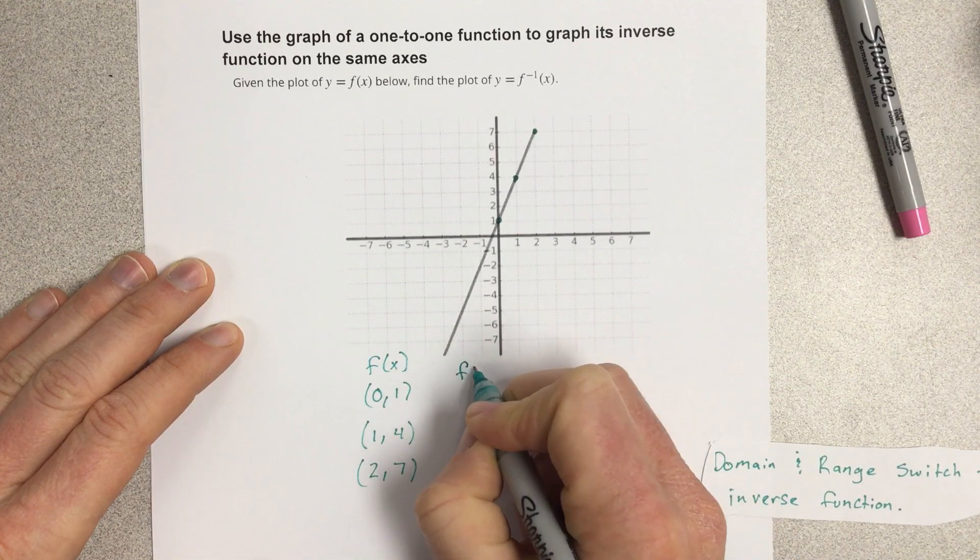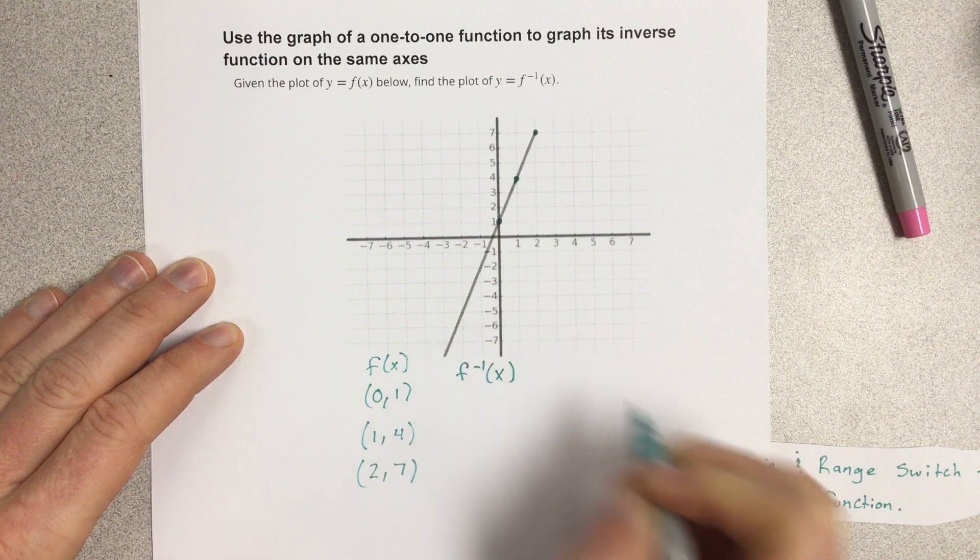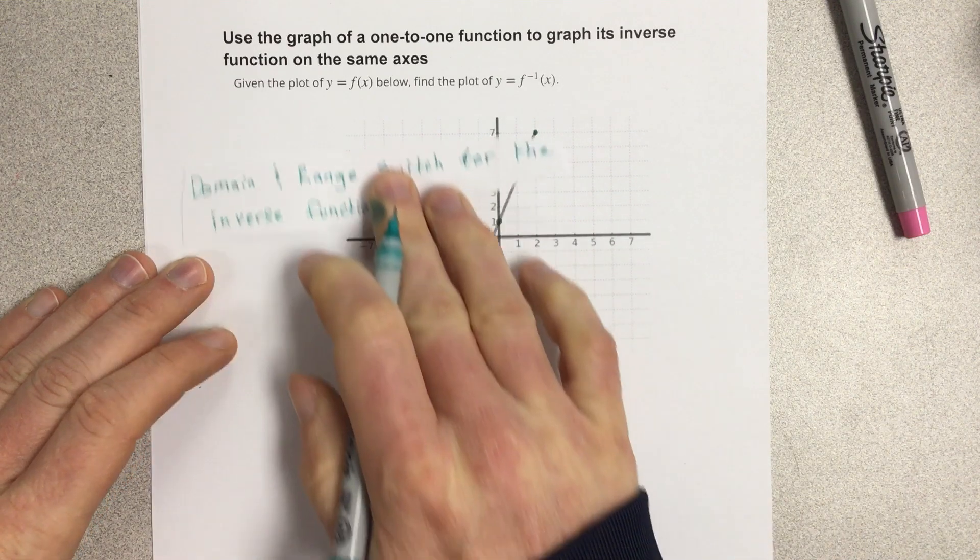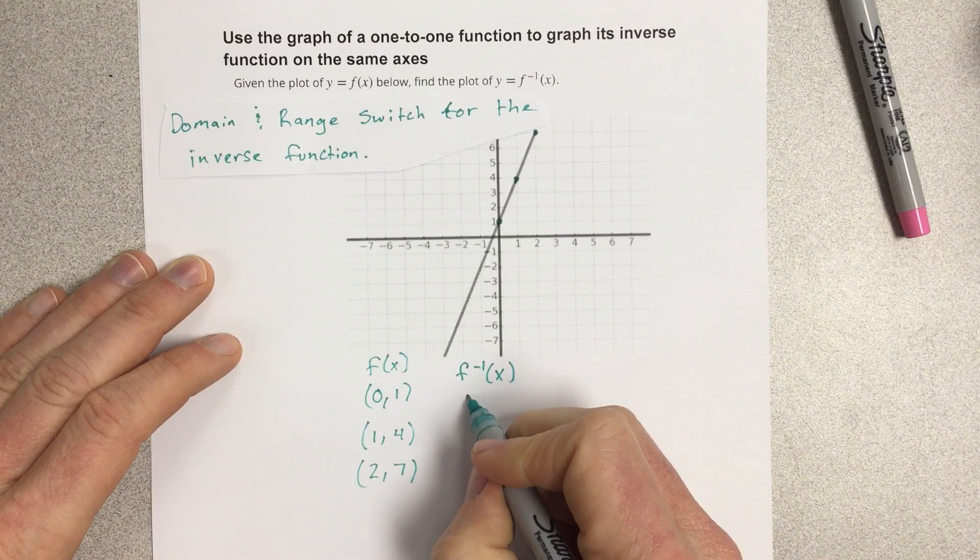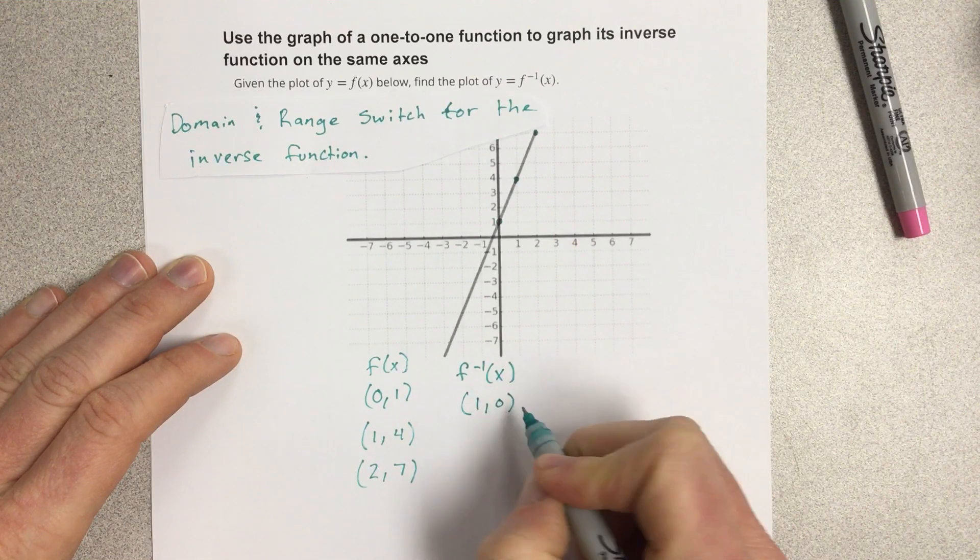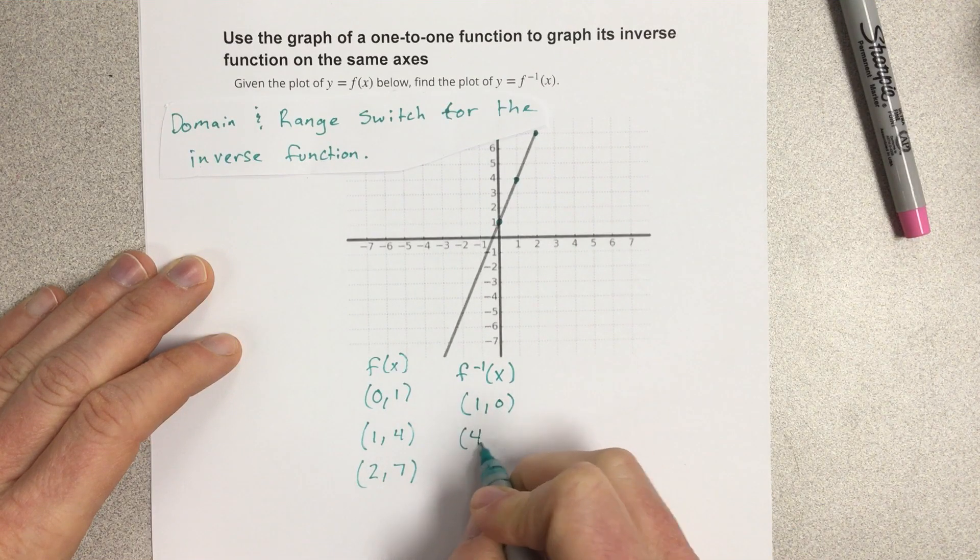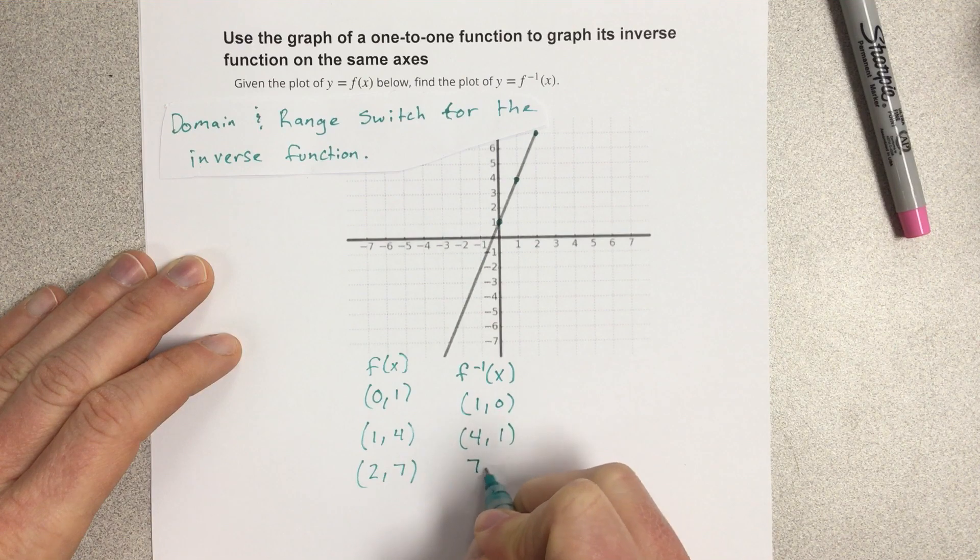My f inverse coordinates are going to be the exact opposite of that, because the domain and range switch for the inverse function. So we're going to say that this is 1, 0, 4, 1, and 7, 2.